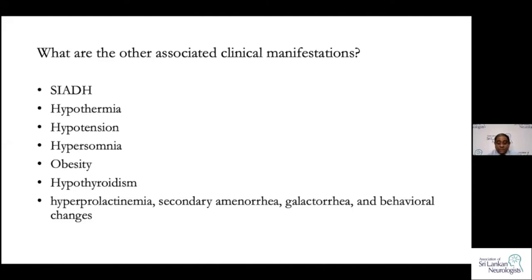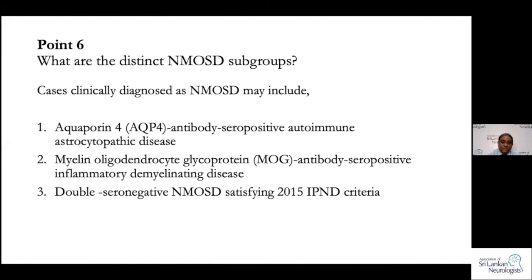These tonic spasms respond very well to carbamazepine. Point six: what are the different distinct NMOSD subgroups? We now have a group that is aquaporin-4-IgG positive, a second group that is MOG antibody positive, and a third group where both antibodies are absent. There are three subgroups, which is important to remember because with the current criteria, we can make a diagnosis of NMOSD without either antibody.